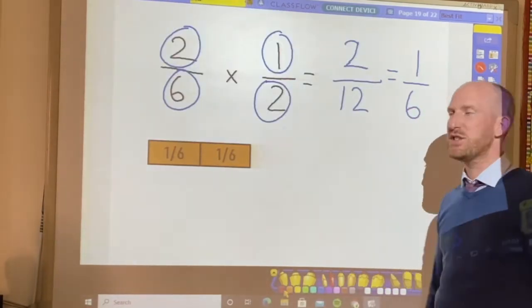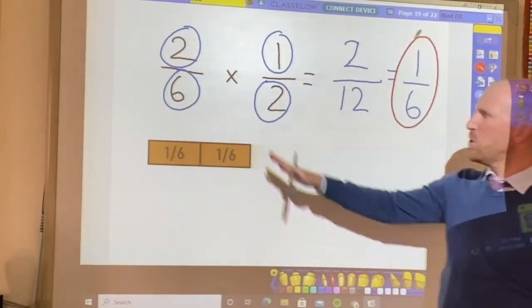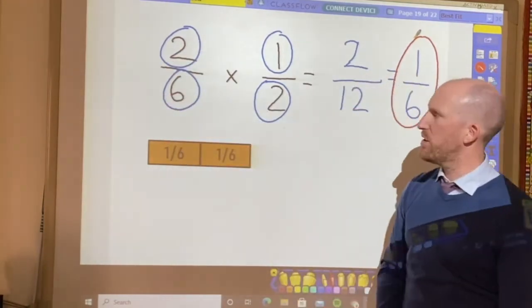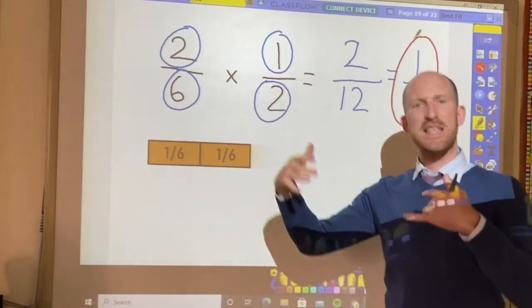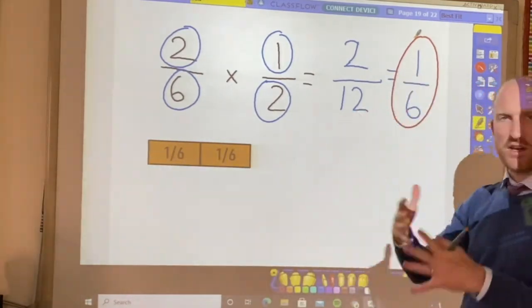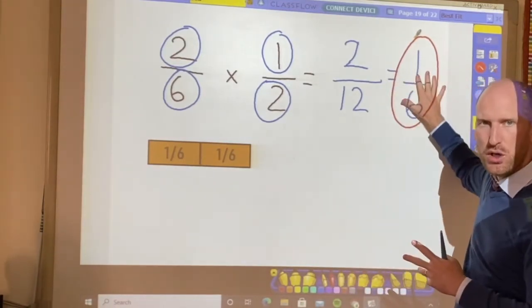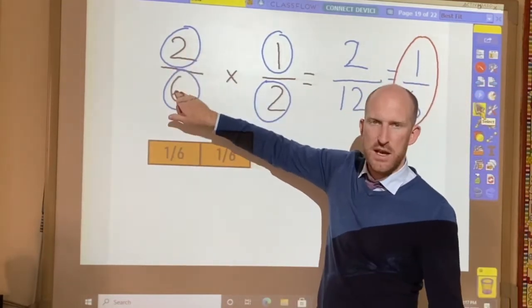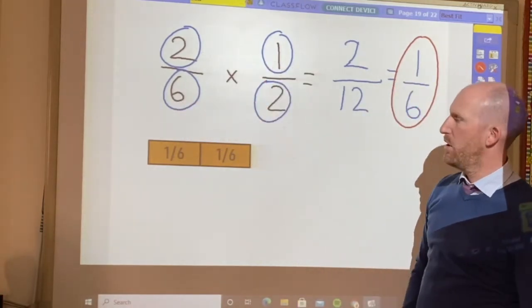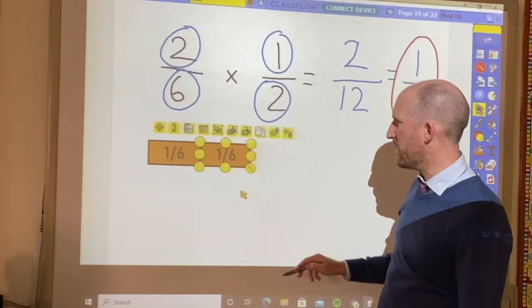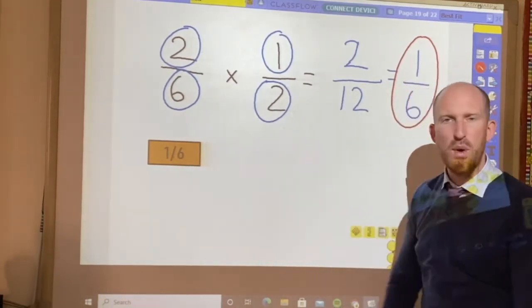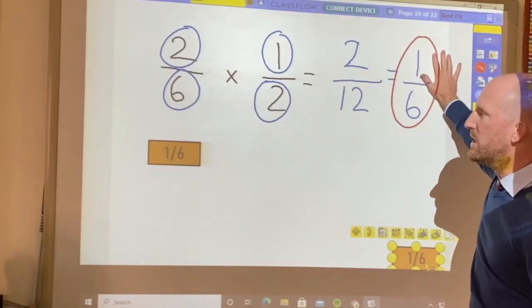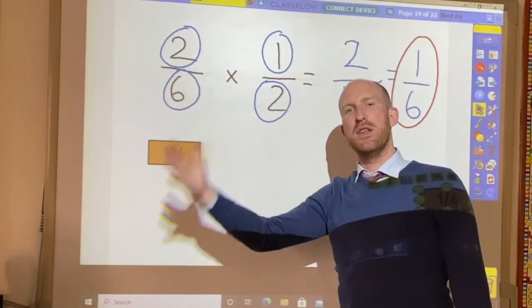Now, some of you amazing mathematicians out there may have realized, well, if I'm multiplying two fractions together, why have I got an answer that is actually smaller than what I started with? Because when we're multiplying, we're so used to think numbers getting bigger. But actually, when we're multiplying two fractions together, we actually end up with a smaller quantity. And if you think about it this way, if I have two sixths here, and I have two sixths, and I'm multiplying by a half, what I'm actually doing is I'm actually halving this. I'm actually taking half away. But it is a good way to check to see if you've done the question correctly, because if you end up with an answer which is larger than the fraction that you started with on left, then you know you've made a mistake.